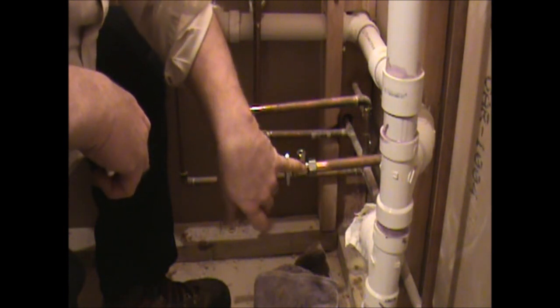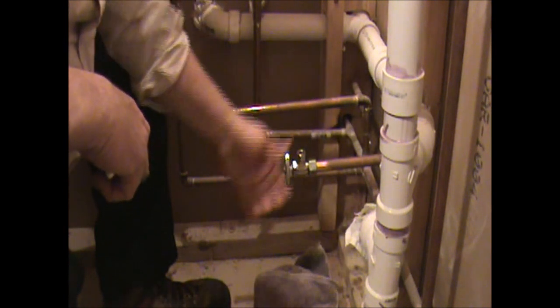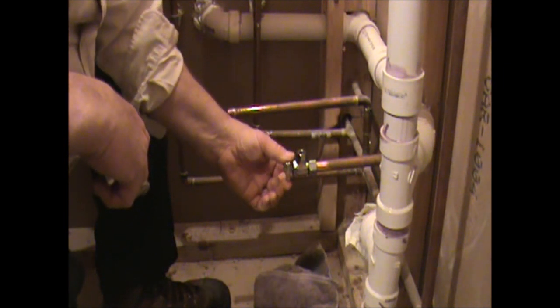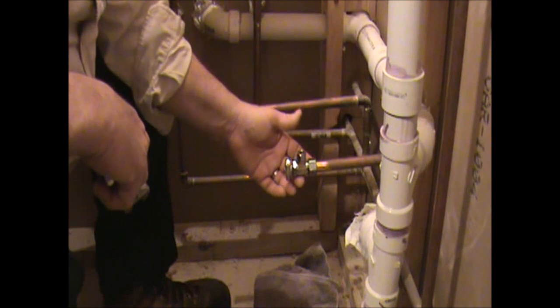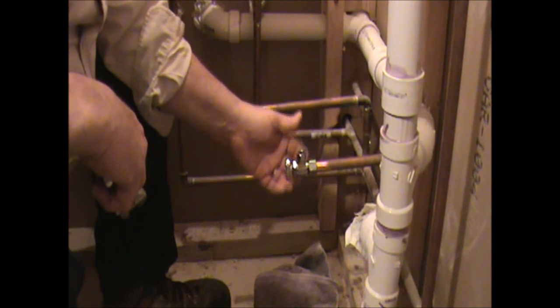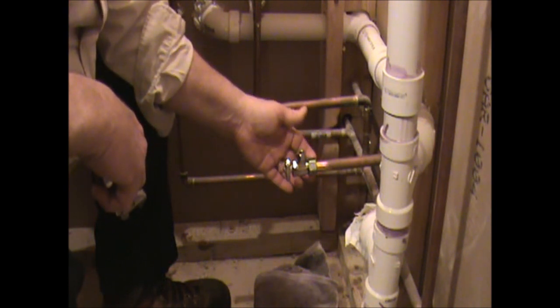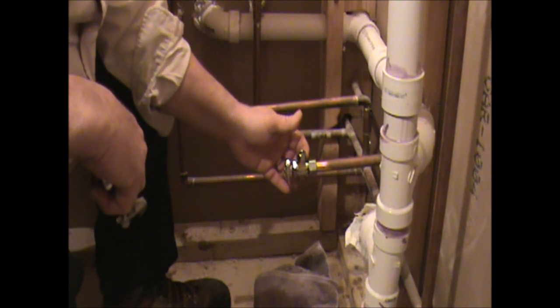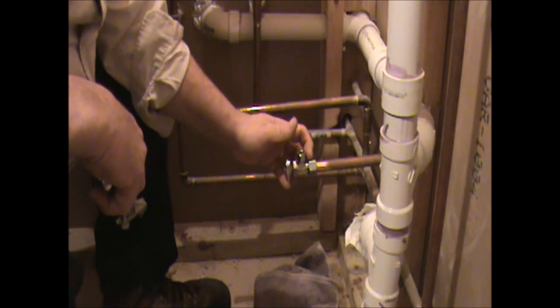Some people will put Teflon tape on these threads. These valves are pretty good valves and I haven't find it necessary to do that with this particular brand of valves. Some of them are made a little more cheaply and sometimes they do leak. So you can wrap a wrap of Teflon tape on those threads before you put the nut on.